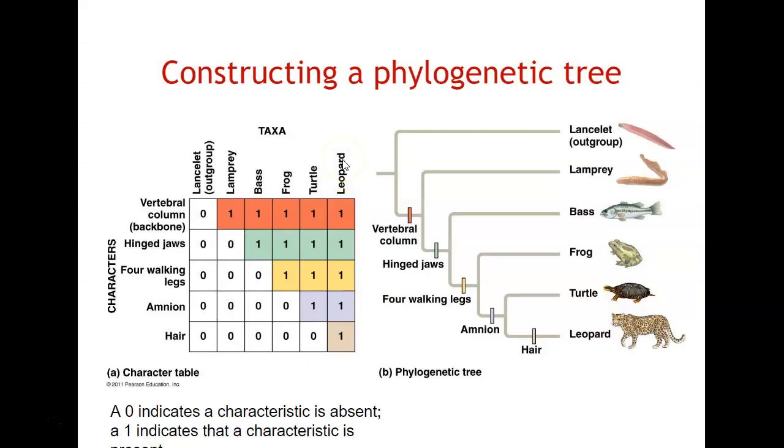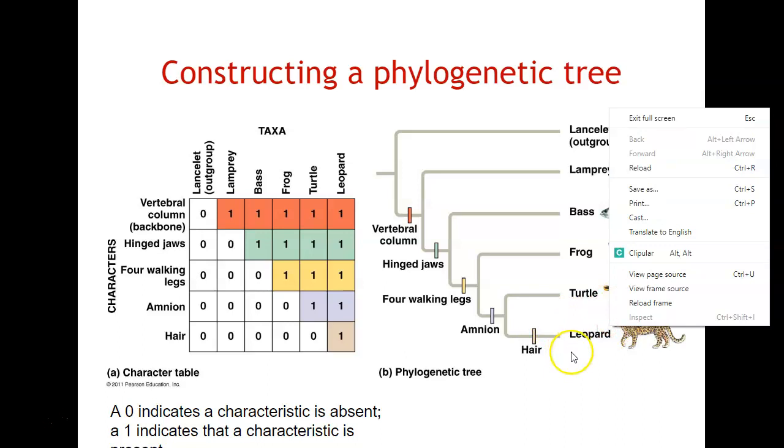How do I construct something like this? The traits are lined up along the left. If there's a zero, it's lacking. If it has a one, it's present. A lancet does not have any of these particular traits, so it branches out first. Then we have a vertebral column which everything else has. Then hinge jaws, walking legs, amnion, and hair. Only the leopard has hair compared to anything else.